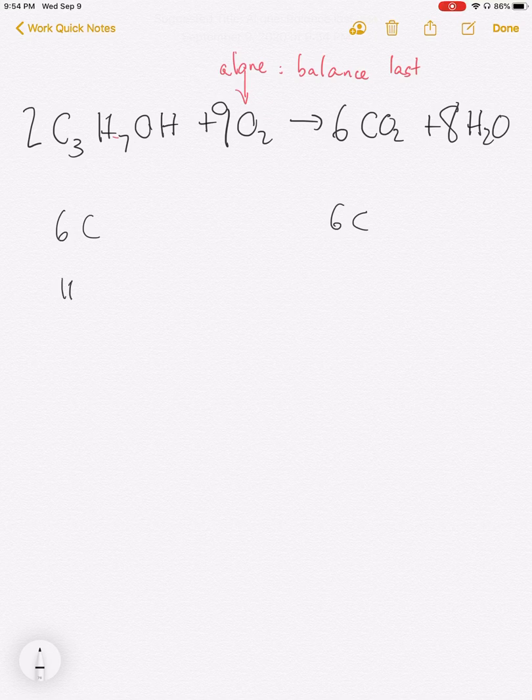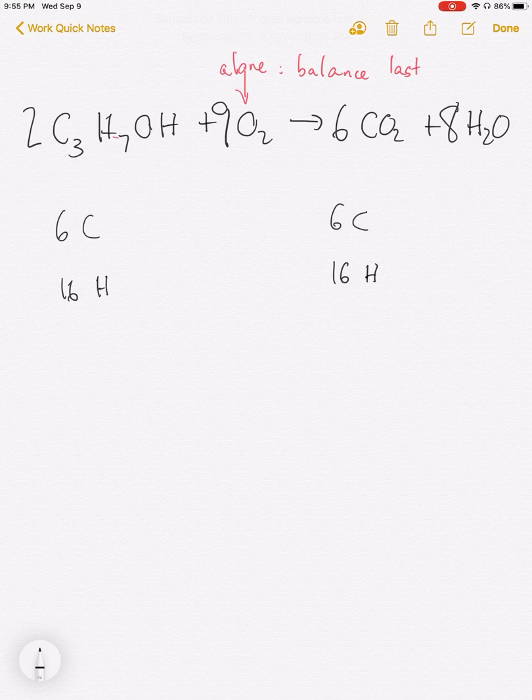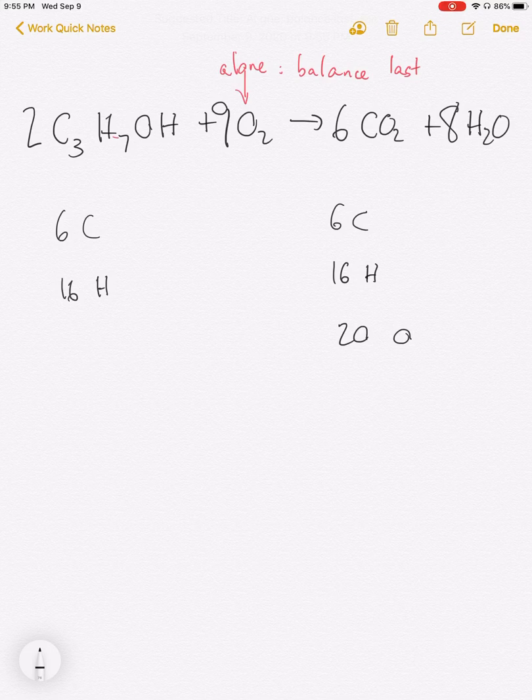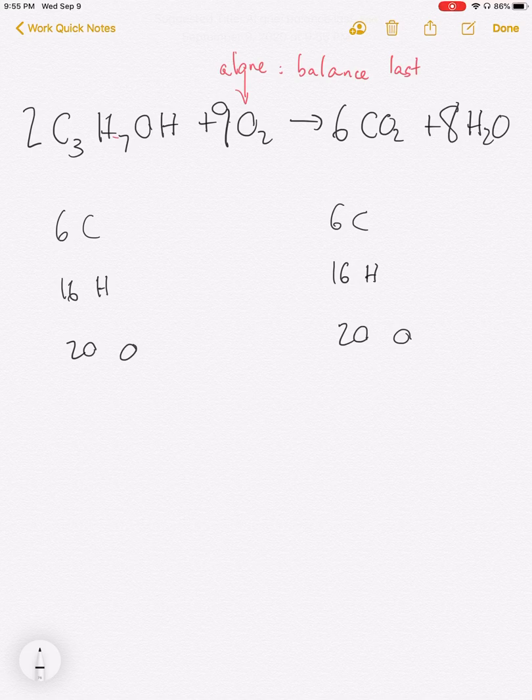Eight times two is 16 hydrogens on the right. And finally, I have six times two is 12 plus eight is 20 oxygens on the right side. I have 18 from oxygen and two more on the propanol, which is 20 oxygens here. And at this point, I do have a balanced chemical equation.